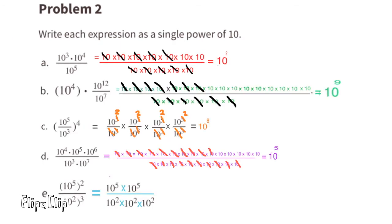For letter E, we have 10 to the power of 5 to the second power divided by 10 to the second power to the third power. That means 10 to the power of 5 times 10 to the power of 5 on top, over 10 to the power of 2 times 10 to the power of 2 times 10 to the power of 2 on the bottom. We cancel out each 10 to the second power from the bottom against the top. 10 to the sixth power minus 10 to the second power is 10 to the fourth power.